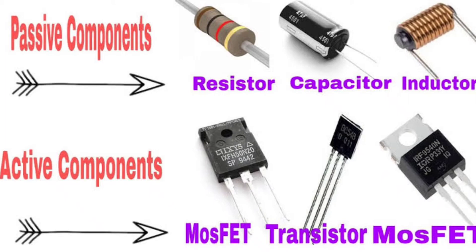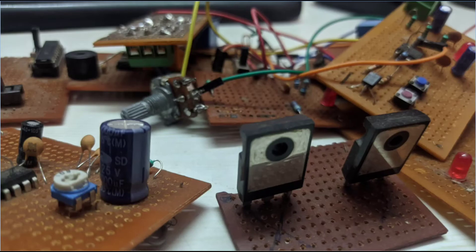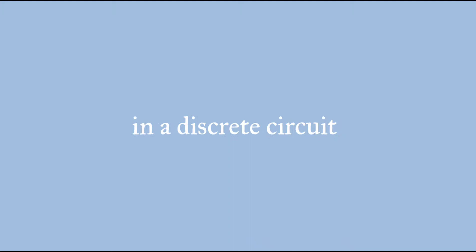The circuit containing passive components like resistors, inductors, capacitors, and active components like diodes and transistors, jointly wired on a printed circuit board (PCB), is known as a discrete circuit. Each component is added to the circuit discretely, which is why it is called a discrete circuit.